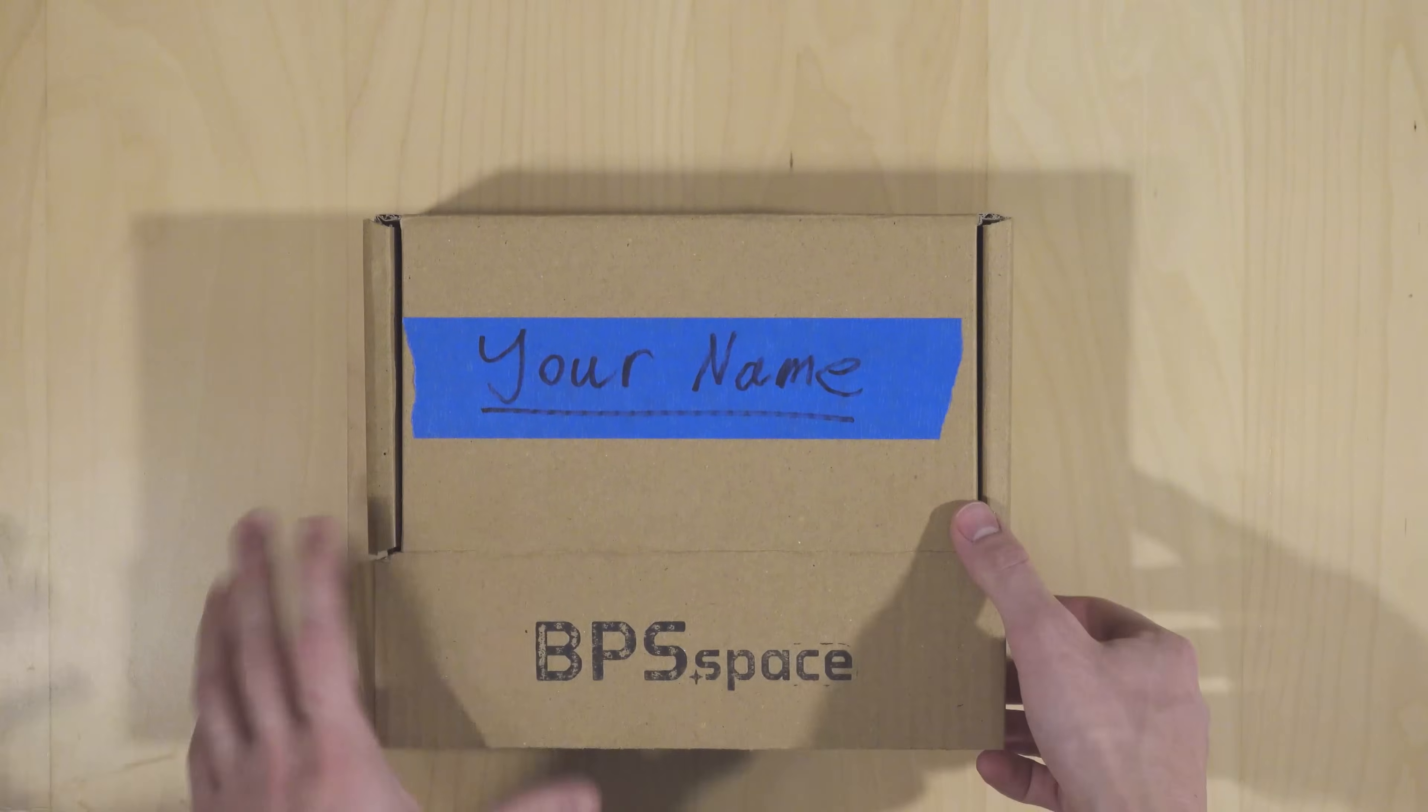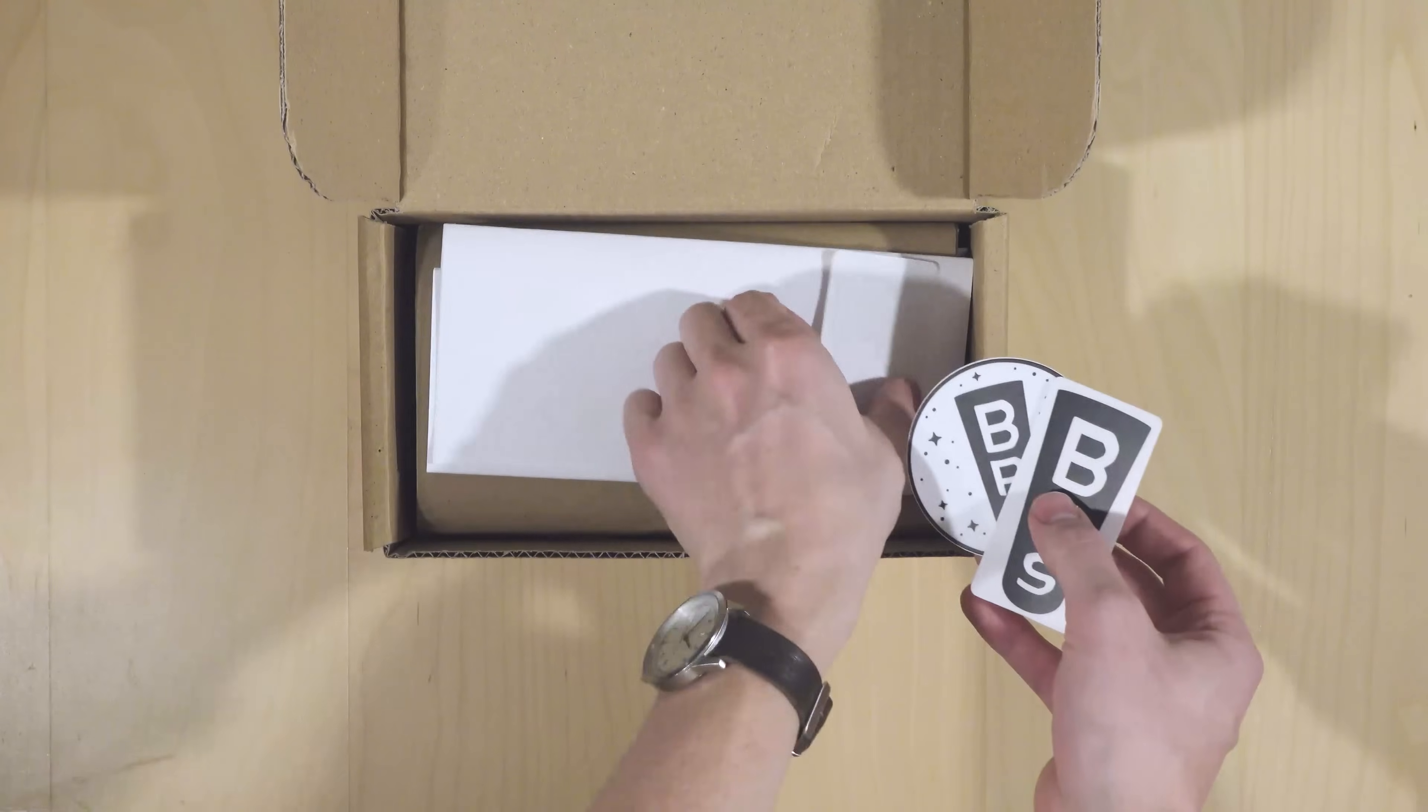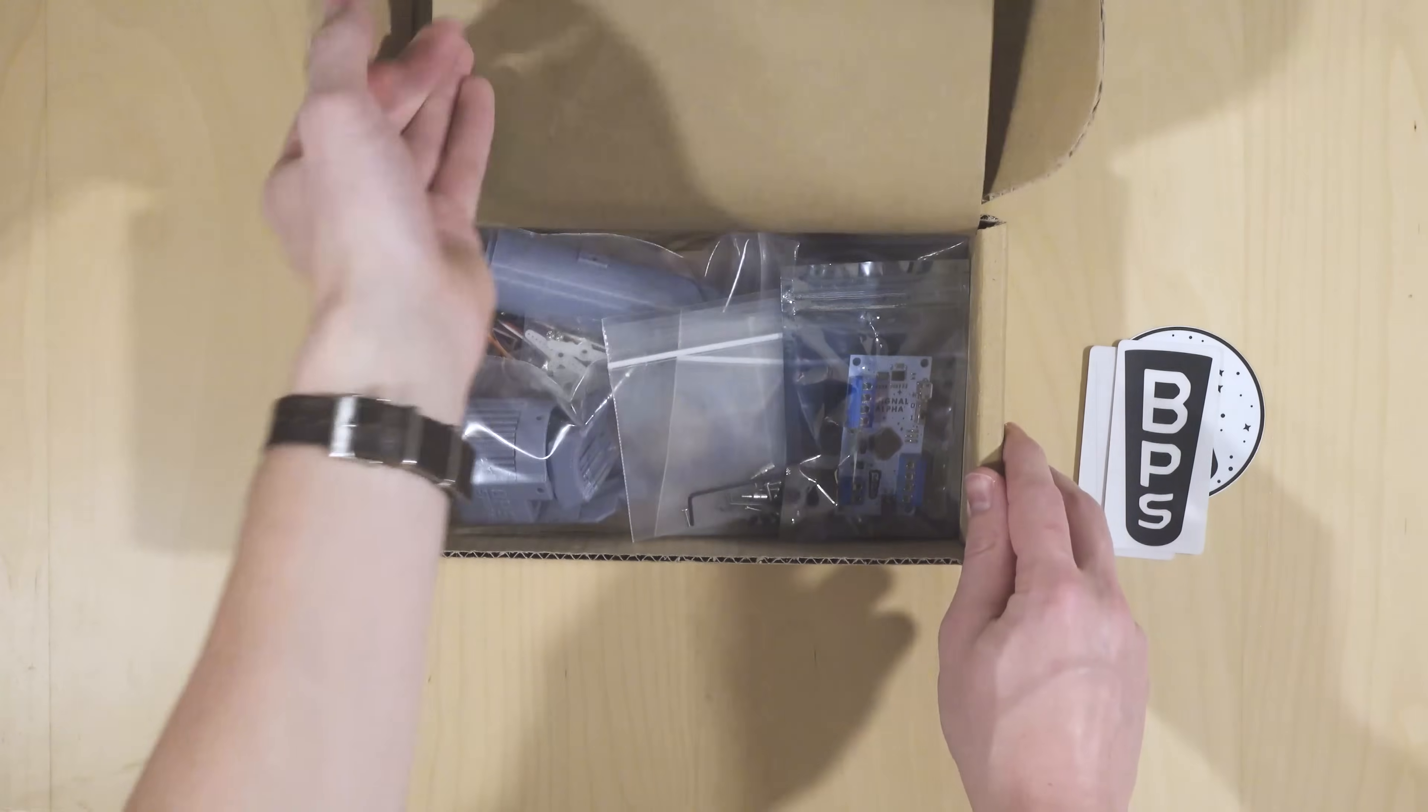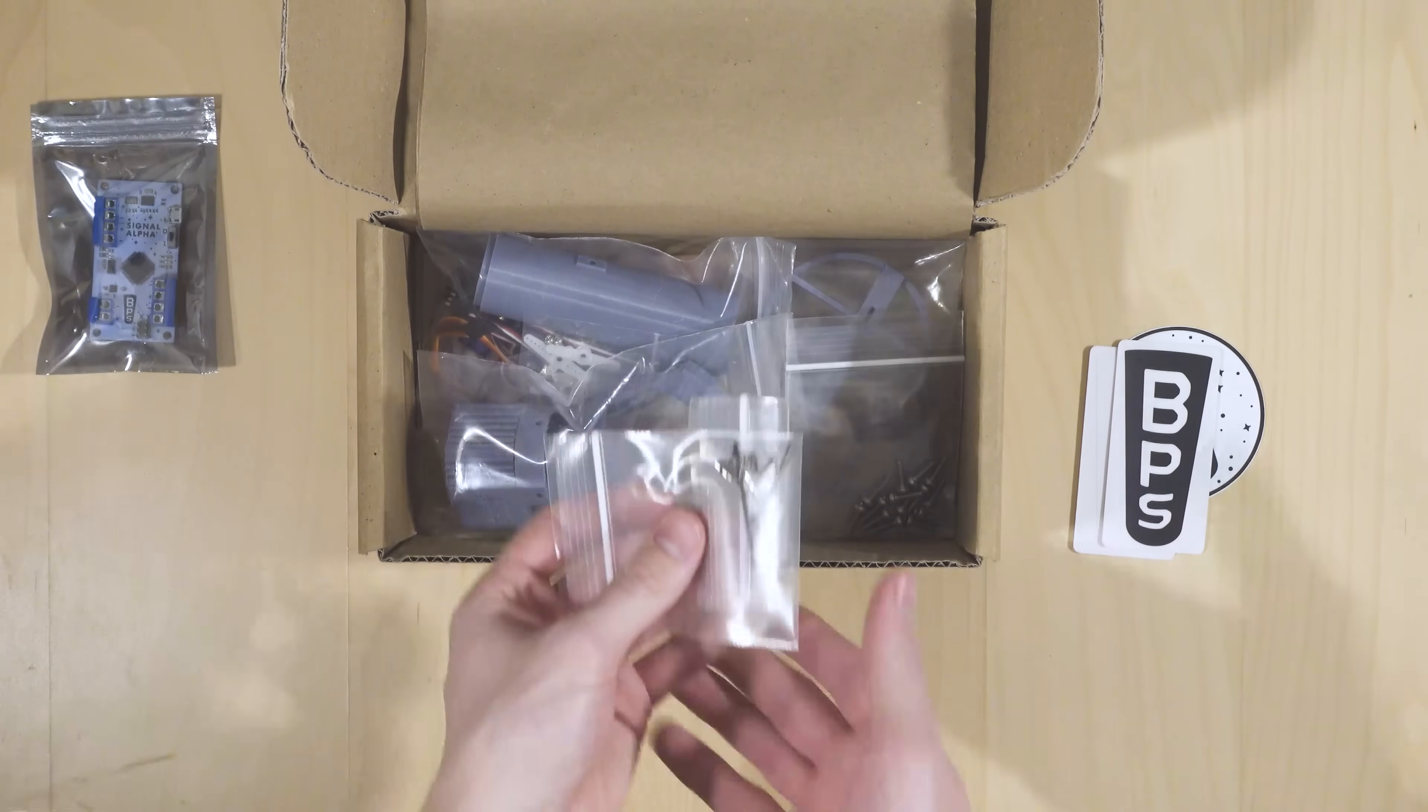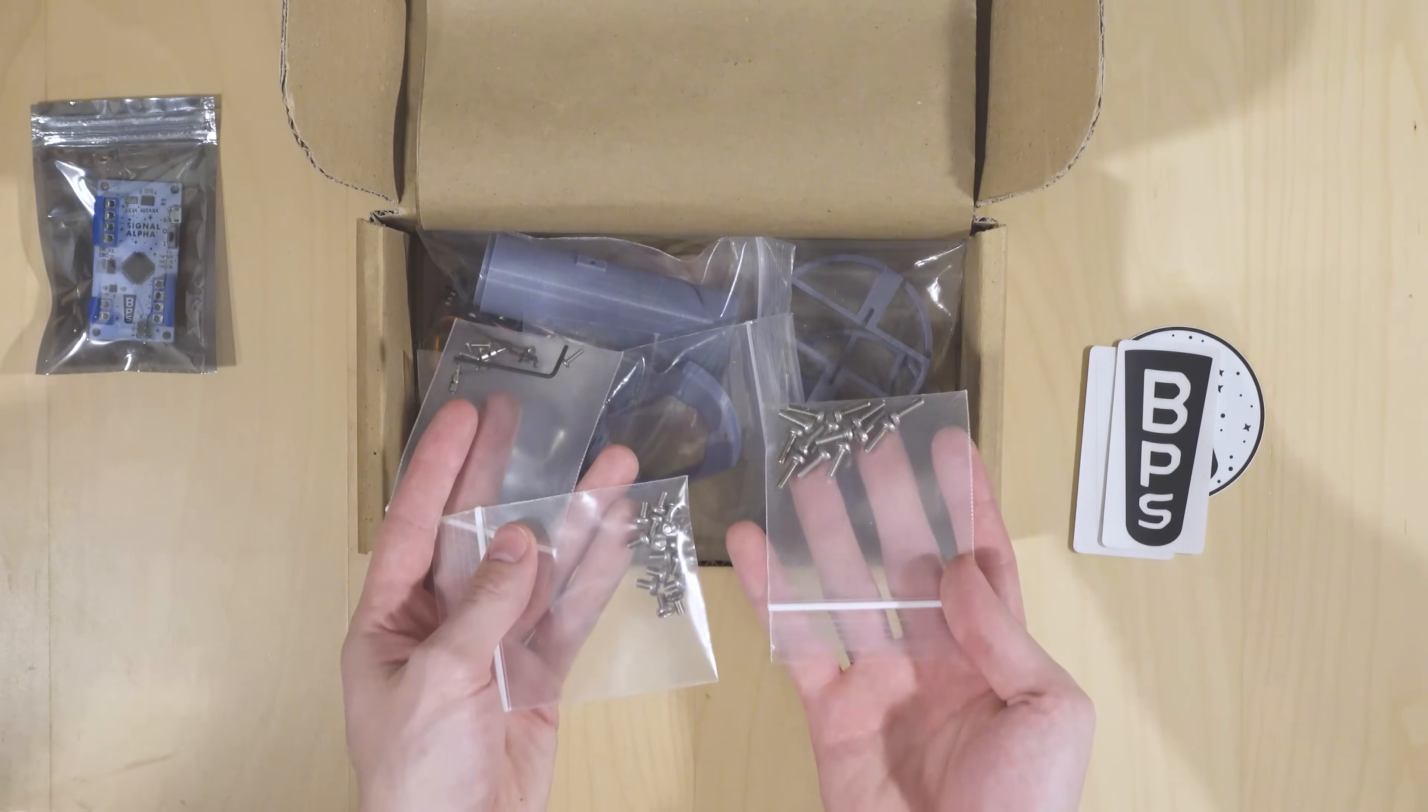So first we'll start by unboxing. On the top we've got our BPS stickers, these can go on a rocket or anything else. We've also got the TBC cutout guides and the flight computer guides. Under this piece of paper we have our most important component, which is the Signal Alpha flight computer. After that we have a couple of bags with smaller components, like a hex wrench, some pushrods, and M3.5mm screws.